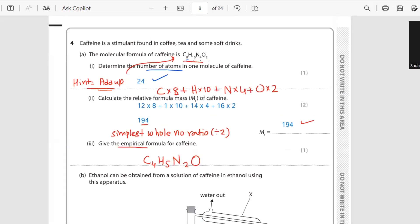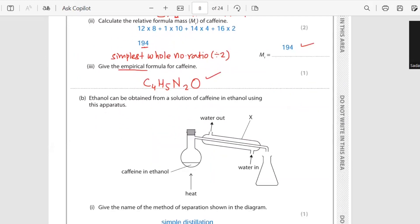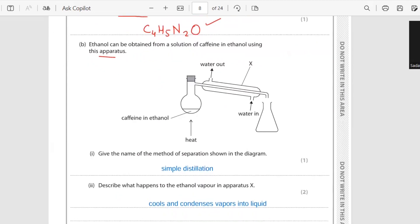Give the empirical formula for caffeine. How you get the empirical formula: you have to take the simplest whole number ratio. So carbon is 8, hydrogen is 10, nitrogen is 4, and oxygen is 2. If we divide all these values by the smallest value that is 2, you will get the answer. Ethanol can be obtained from solution of caffeine in ethanol using this apparatus. Give the name of the method of separation shown in the diagram. As you know, in this picture you don't find any glass beads or any fractionating column. It's a simple distillation technique which works on boiling and then condensation. Describe what happens to the ethanol vapor in apparatus X - here it is used for cooling purpose so that it can convert the gas or vapors into the liquid.